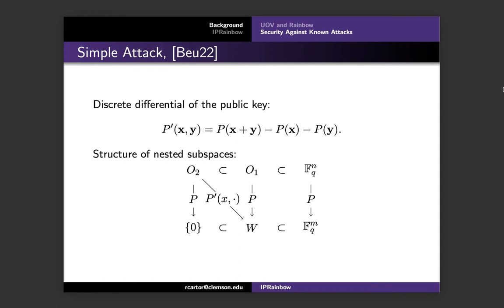All the vectors in the layer 2 oil space will be mapped to a vector space of dimension O2, and so we're going to call that space W. From analysis in Beullens's 2021 paper, which was improved cryptanalysis of UOV and rainbow, we know that if we have a vector y in O2, then p prime of xy is going to be in W for any vector x. This information is used in the simple attack, and that's what we're going to be describing next.